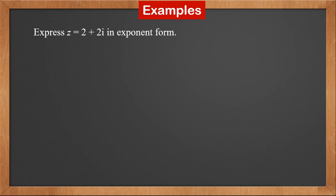Express 2 plus 2i in exponential form. Z's modulus is 2 root 2, and z's argument is quarter pi. So the exponential form is 2 root 2 times e to the power of quarter pi i.